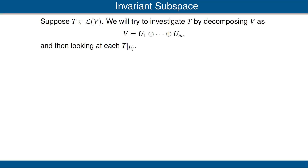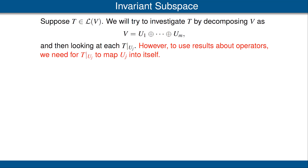To motivate our next definition, suppose T is a linear map from V to V. We will try to investigate T by decomposing the vector space V into a direct sum of smaller subspaces, and then looking at T restricted to each of those smaller subspaces. The notation used for the restriction of a linear map to a smaller subspace is shown here. We are just reducing the domain of T to a smaller subspace. However, we will be developing theorems about operators, and if we want to apply those theorems to T restricted to a subspace U_j, we need to make sure that T restricted to U_j maps into itself. This leads to the following definition.